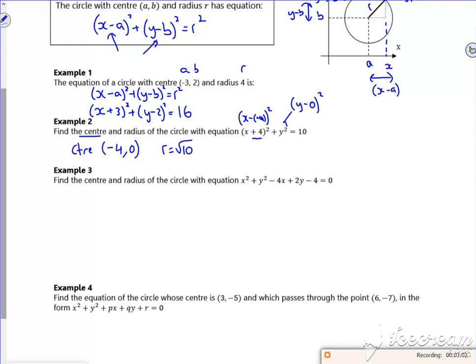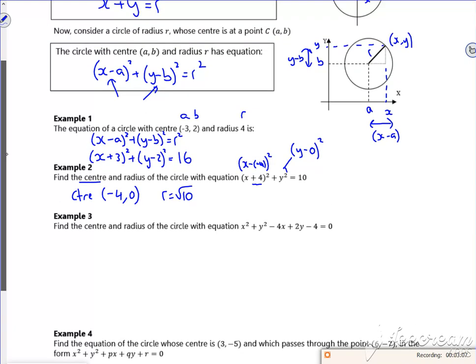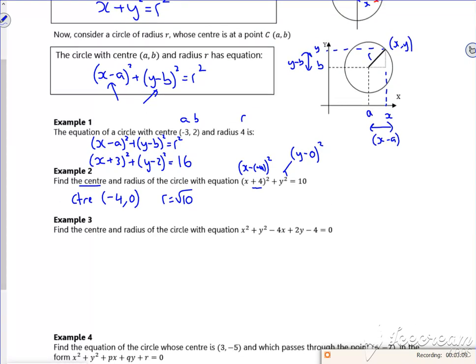Now then this one's a little bit more tricky. We have an expanded form of this equation. If I expand my bracket. So let's do it over here. So say I've got x minus a all squared and y minus b all squared is r squared. If I expand the bracket it's x squared minus 2ax plus a squared plus y squared minus 2by plus b squared is equal to r squared.